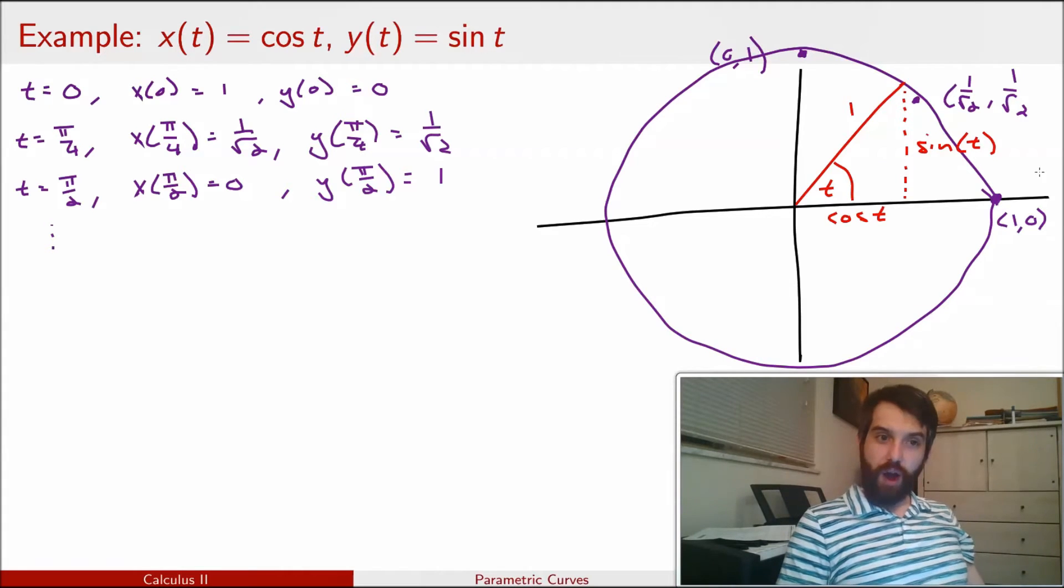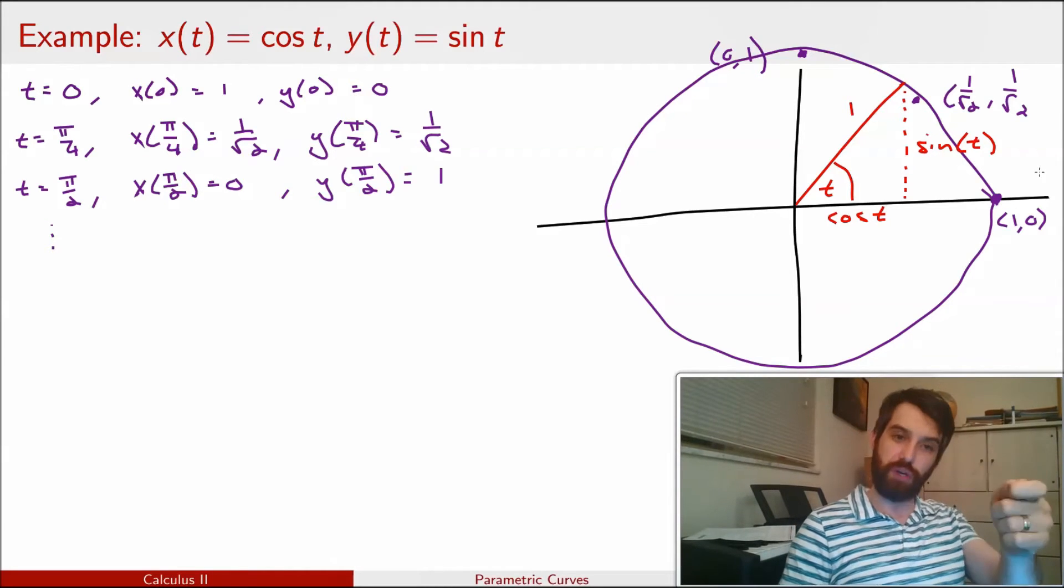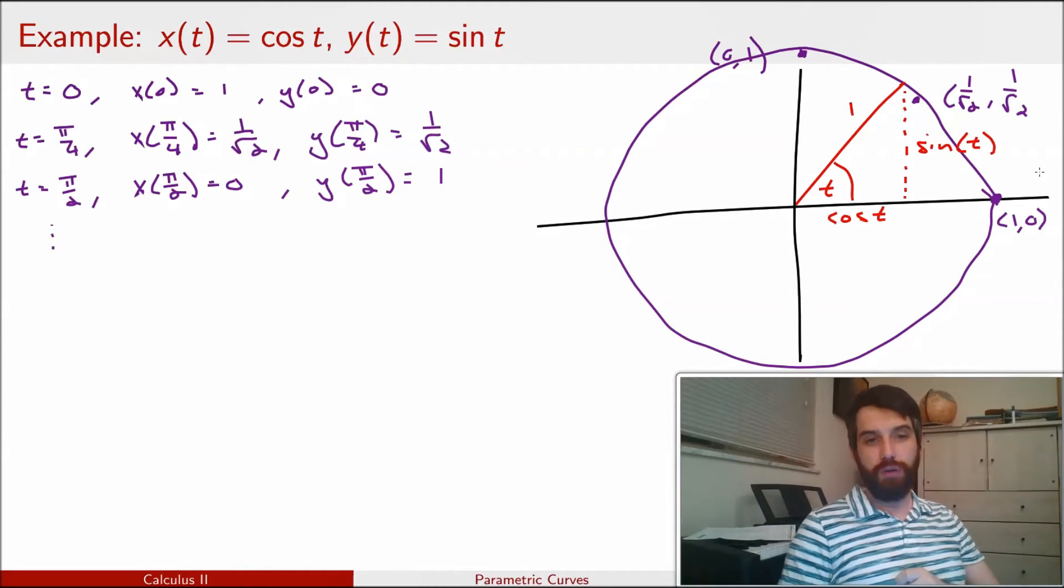And therefore that my y is going to be sin of t. So indeed, our trigonometric notion of a circle of radius 1 has this property that any point on the circle, its x coordinate is cos of t, and its y coordinate is sin of t.